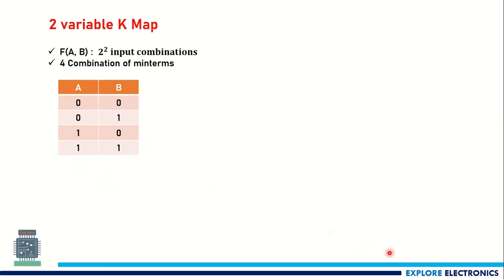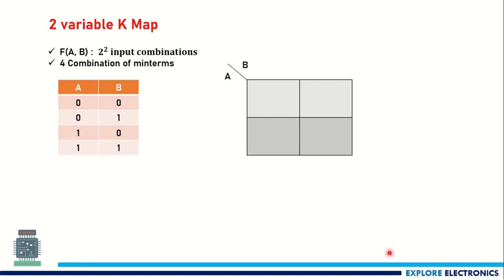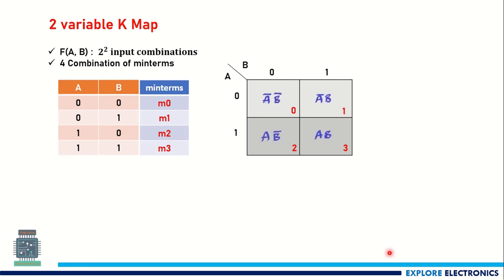In the A, B table you can see different combinations of input values. These 4 input combinations require 4 cells in the KMAP. On one side we write variable A and on the other side variable B. A takes values 0 and 1, B takes values 0 and 1. The cells are named with min terms M0, M1, M2, M3 — corresponding to A̅B̅, A̅B, AB̅, and AB respectively.